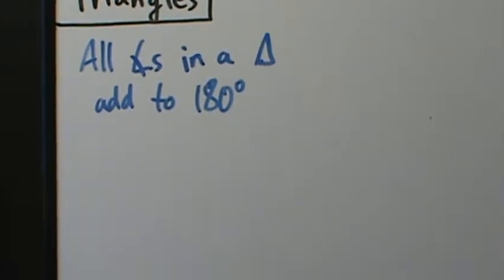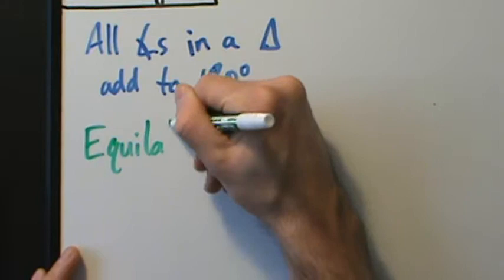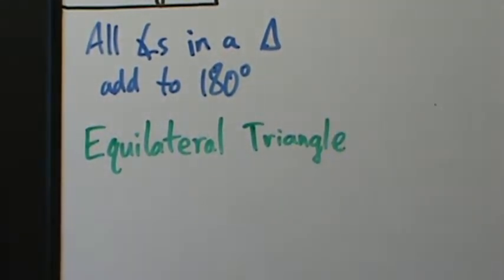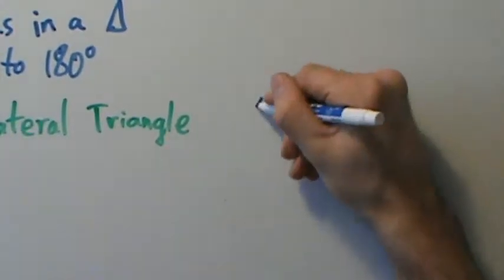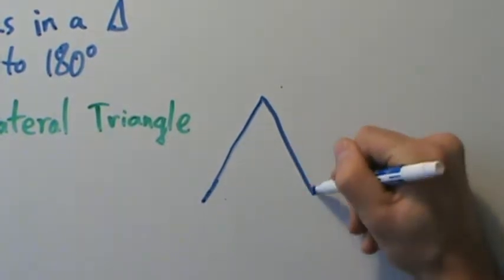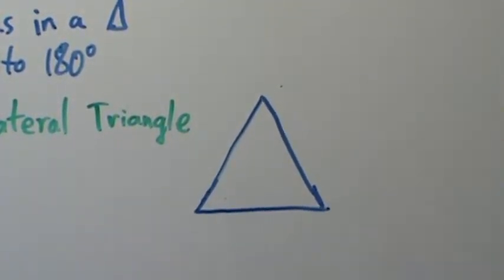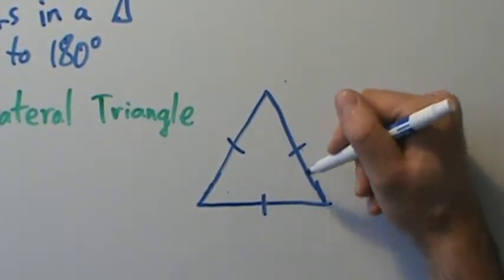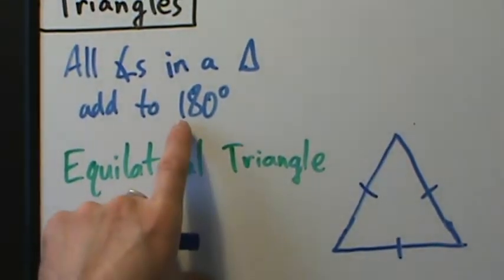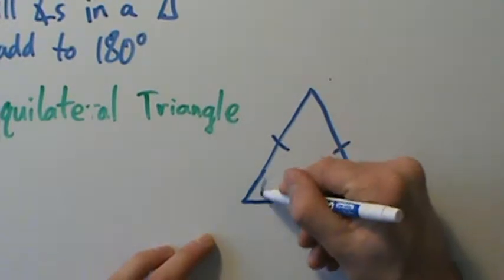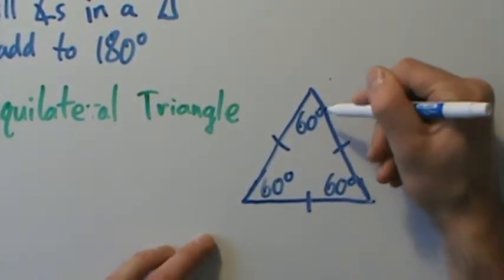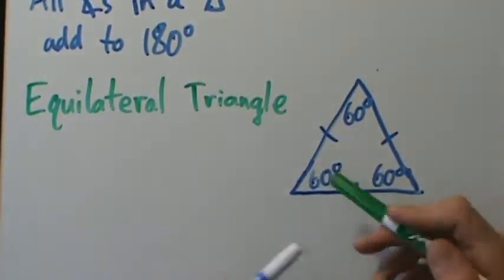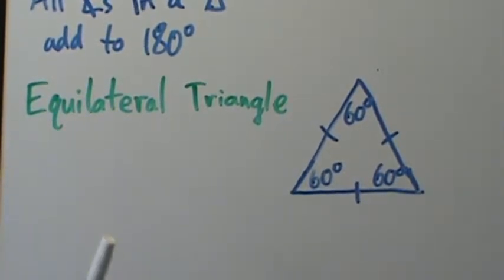So let's talk about different types of triangles. First, an equilateral triangle — all three sides have the same length, which we denote with tick marks. Because all three sides are equal, all three angles have the same measure. Since they must add to 180 degrees, each angle is one-third of 180, so each angle is 60 degrees. In an equilateral triangle, no matter the side lengths, all angles are 60 degrees.